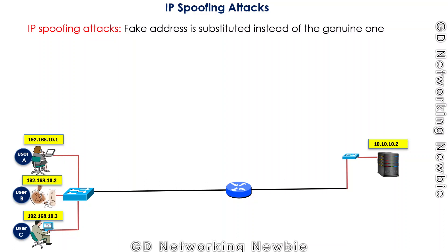Today we are going to discuss IP spoofing attacks. As per definition, IP spoofing attacks are attacks where a fake address is substituted instead of the genuine one — so a fake address will be used.